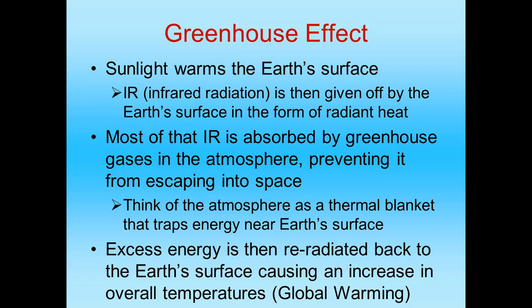The problem is that since the industrial revolution around 1750, we've been producing mass quantities of greenhouse gases. Those gases absorb that radiant heat — that infrared radiation — and prevent it from escaping into space. Think of those gases as a kind of thermal blanket, trapping all that heat energy. That excess energy is then re-radiated back down to the planet's surface, causing an increase in overall temperatures that we call global warming.